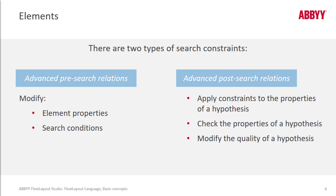At a high level, the advanced pre-search relations allow us to specify certain search areas, and we can do conditional operations — so if something exists or is found, then perform this search. Then there are advanced post-search relations, where we can modify the quality of a hypothesis and apply constraints to the properties of a hypothesis.